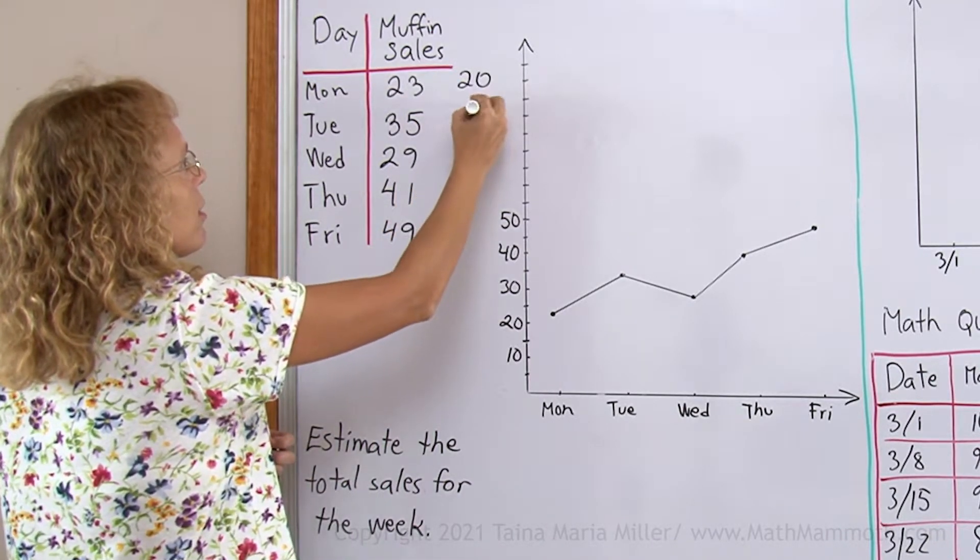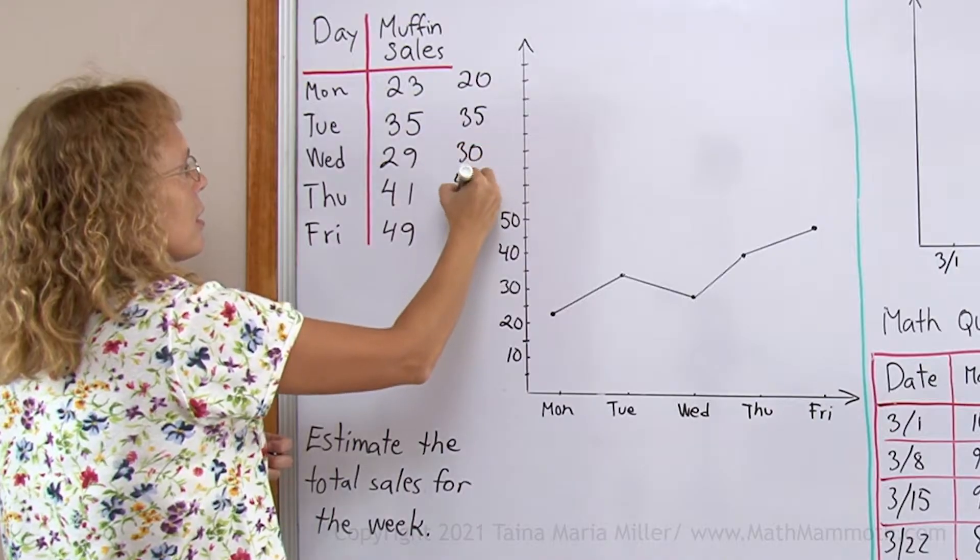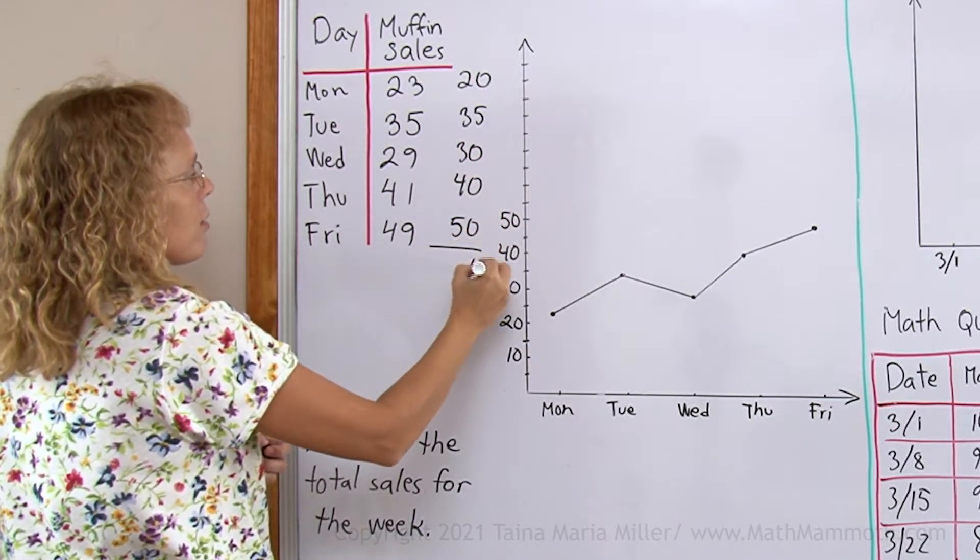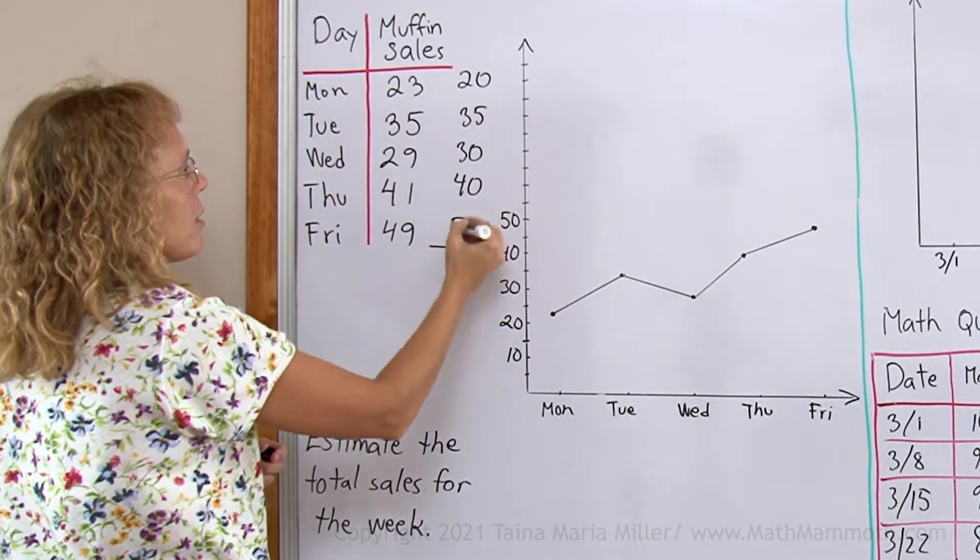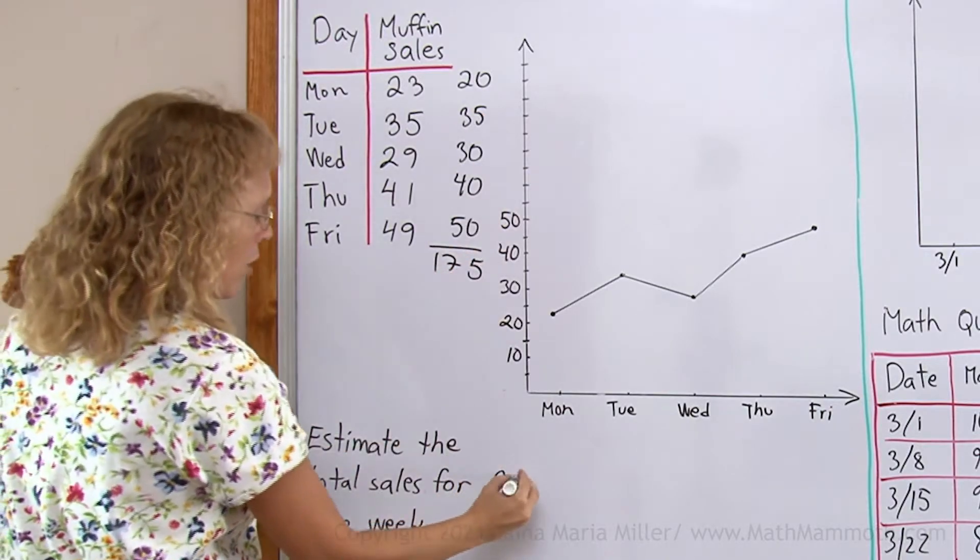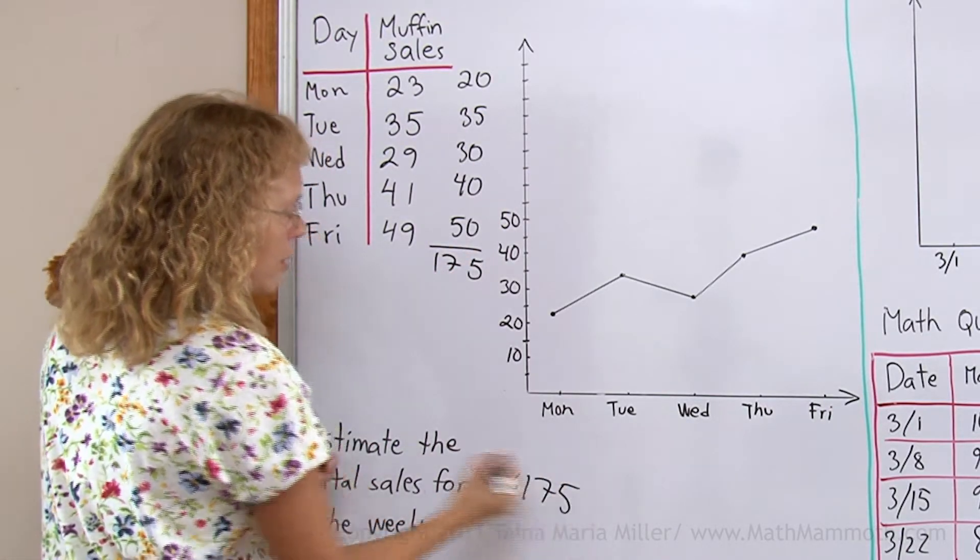I can keep the 35 as it is, so that I won't have so much error here. Now I have 5 here, and then here 5, 10, 17. About 175 is my estimation.